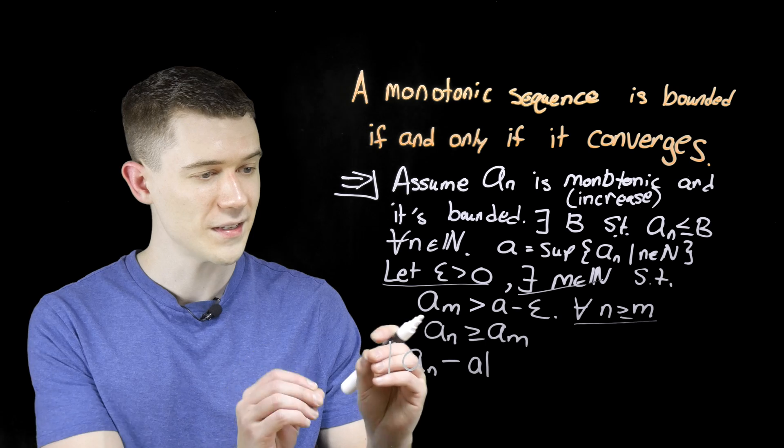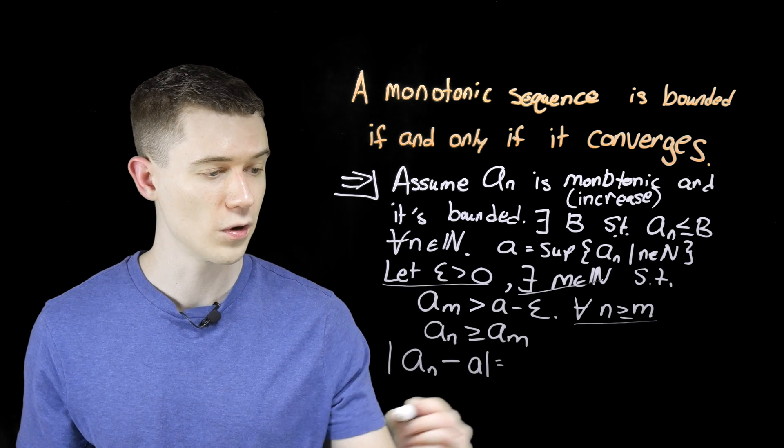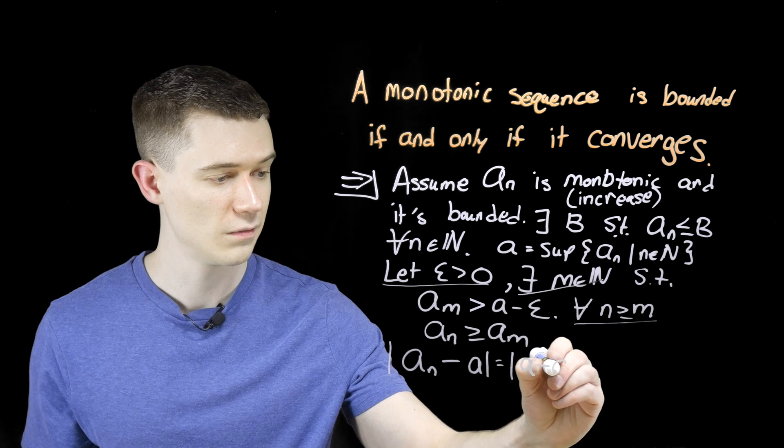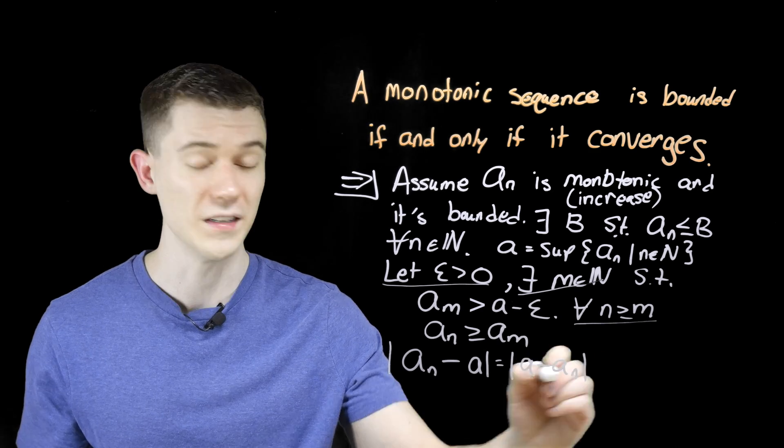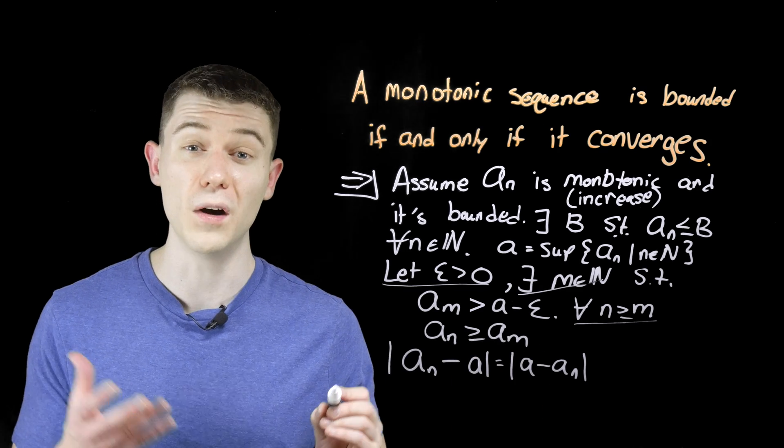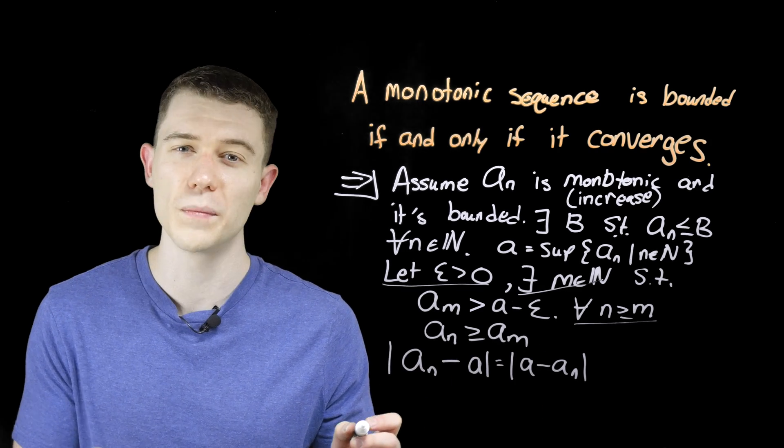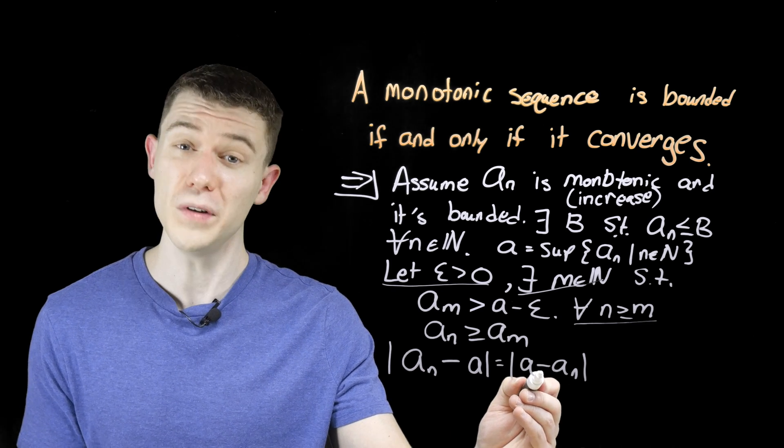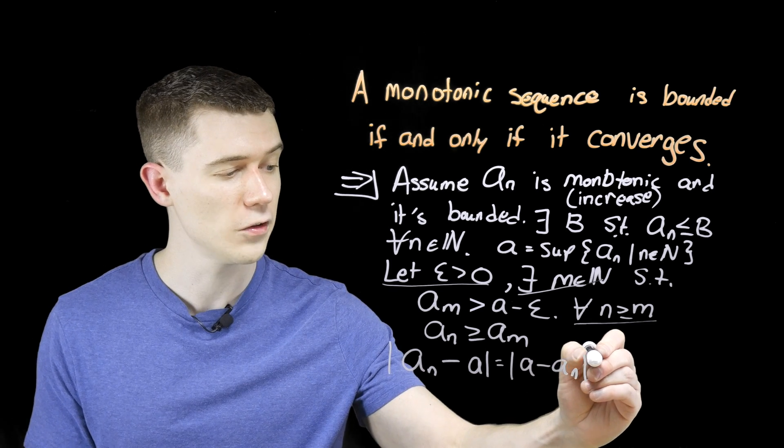Well, one subtle trick here I'm going to do, if I change the order of these in absolute value, that's not going to change anything because it's an absolute value, just negating it will be the same result. But a is the supremum of our sequence. No element from the sequence can be larger than it, so when we take this difference, it's going to be positive, isn't it? In other words,